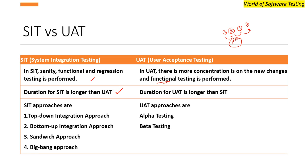The duration for SIT is longer than UAT — system integration testing takes longer than user acceptance testing. The duration for UAT is shorter than SIT. Typically a UAT takes around three to four hours, depending on the new changes and functional tests required.